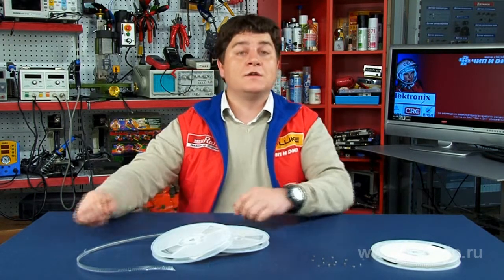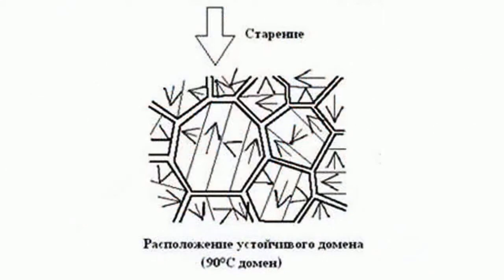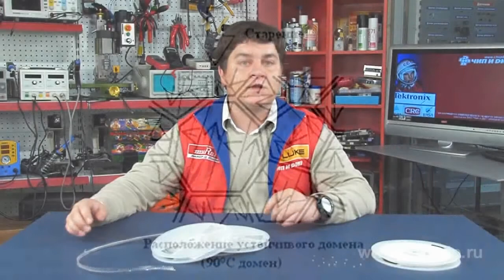When capacitors are stored or used without loading at temperatures below the Curie point, randomly oriented domains become larger and gradually shift to a stable energy state. This facilitates the relief of residual stress at crystal distortions. An additional movement of special charges within domain walls leads to polarization of special charges, which adversely affects spontaneous polarization, preventing its inversion.